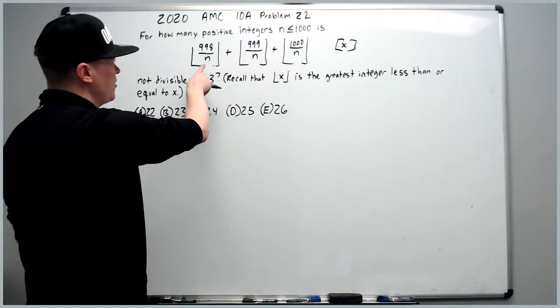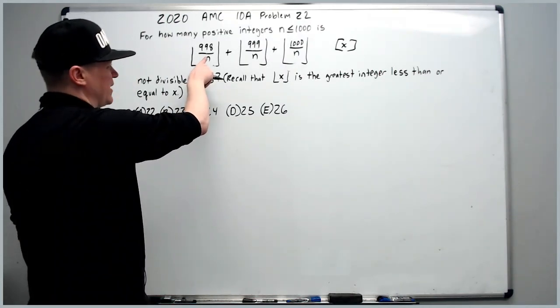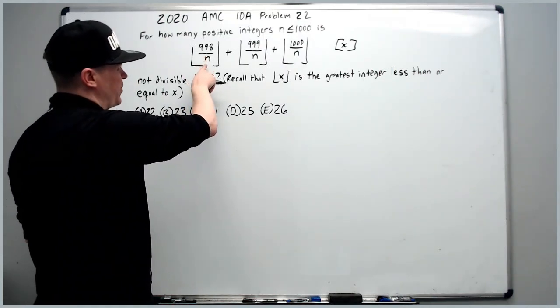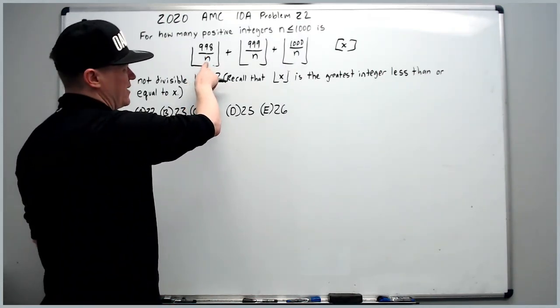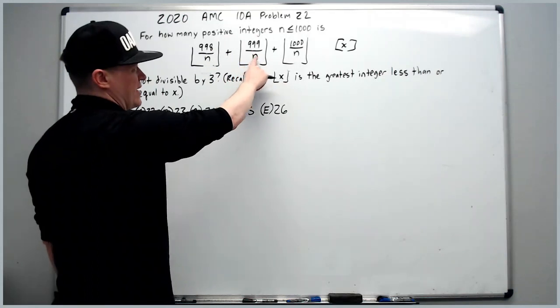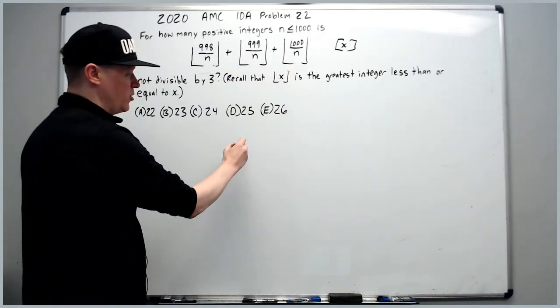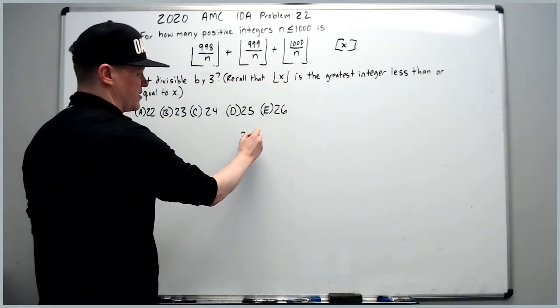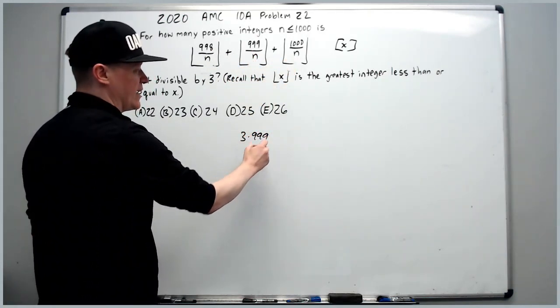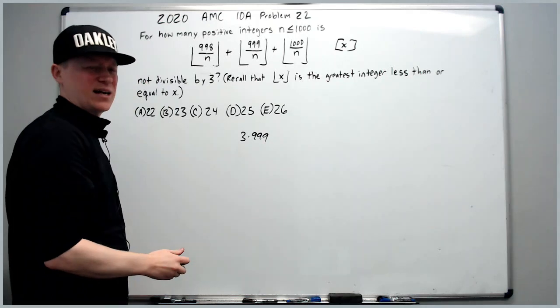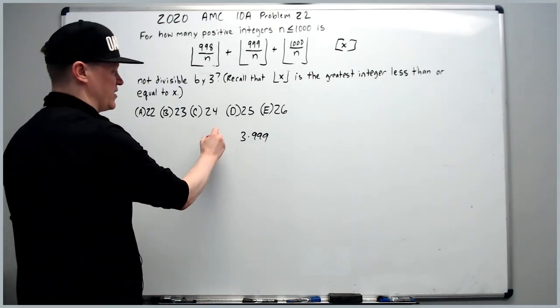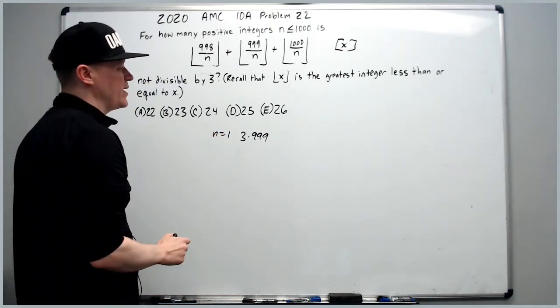If n equals 1, we get essentially ⌊998/1⌋ + ⌊999/1⌋ + ⌊1000/1⌋ = 998 + 999 + 1000 = 3 × 999, which is obviously divisible by 3. So n = 1 doesn't work.